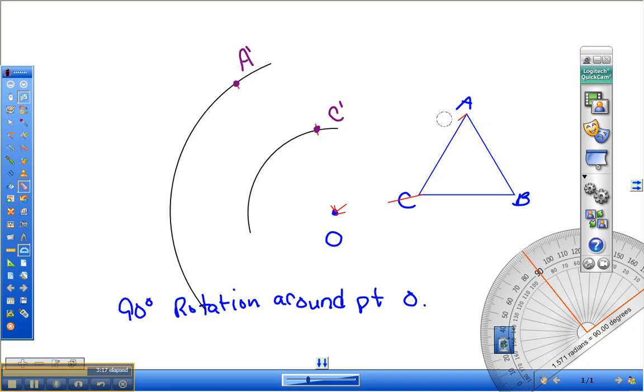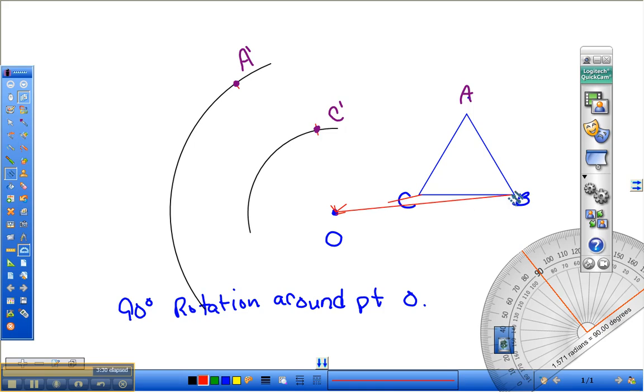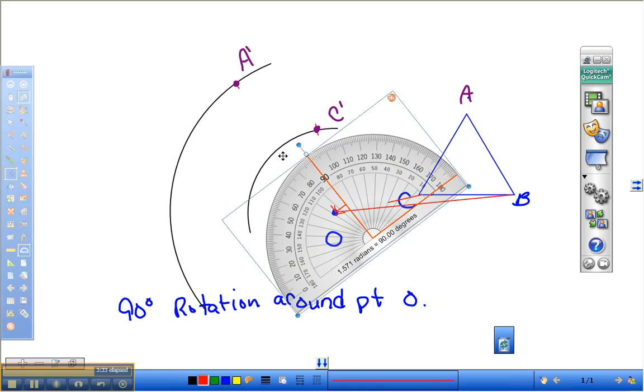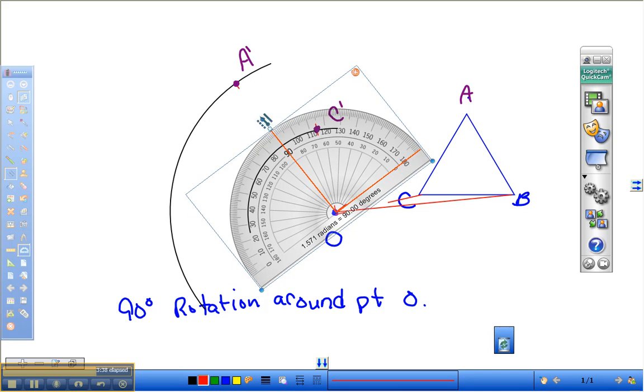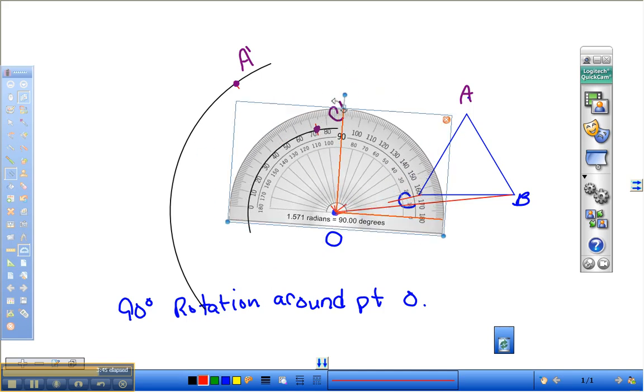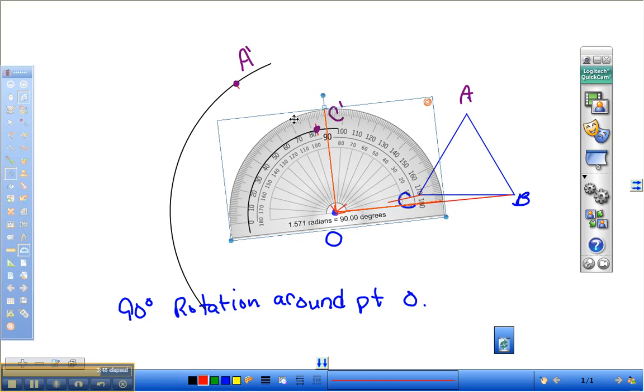And we only have one more point to do. So let's connect our point of rotation, O, to point B. We'll grab our protractor. Our 90 degree angle measure. Move the protractor out of the way. Let's draw our line from our rotation point through the 90 degree angle.